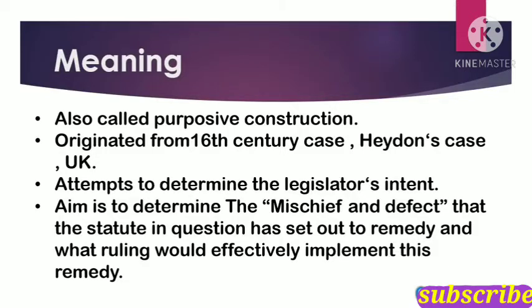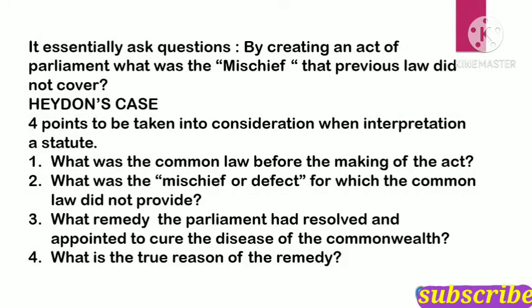Basically, it tries to know the intention of the legislation. The first point is: what was the common law before the making of the act — i.e., what was the law before; we look at the history of the act. The second is: what was the mischief or defect for which the common law did not provide — i.e., what mischief or defect was not covered by the earlier act and Parliament had to create a new act. Third is: what remedy had Parliament resolved — what remedy has Parliament provided for that mischief or defect in the new act. Fourth: what is the reason of the remedy — what is Parliament's main reason behind providing that remedy.